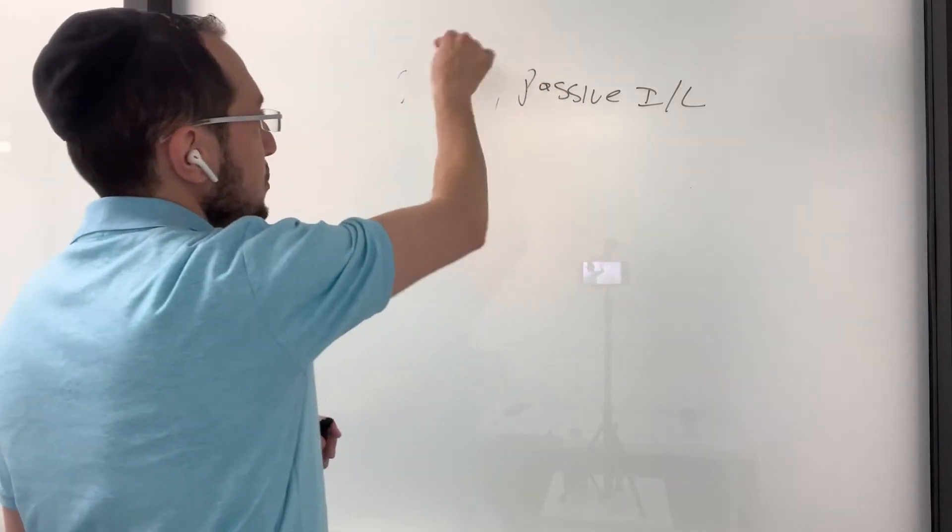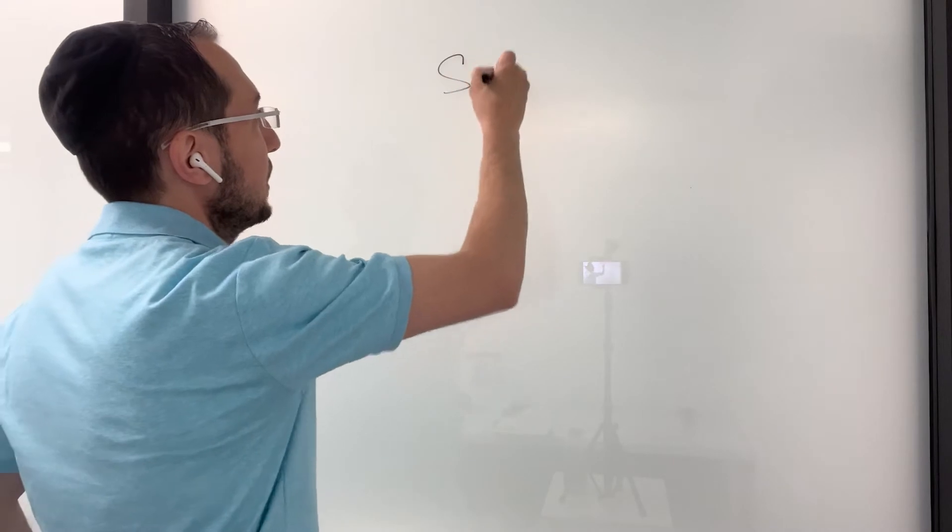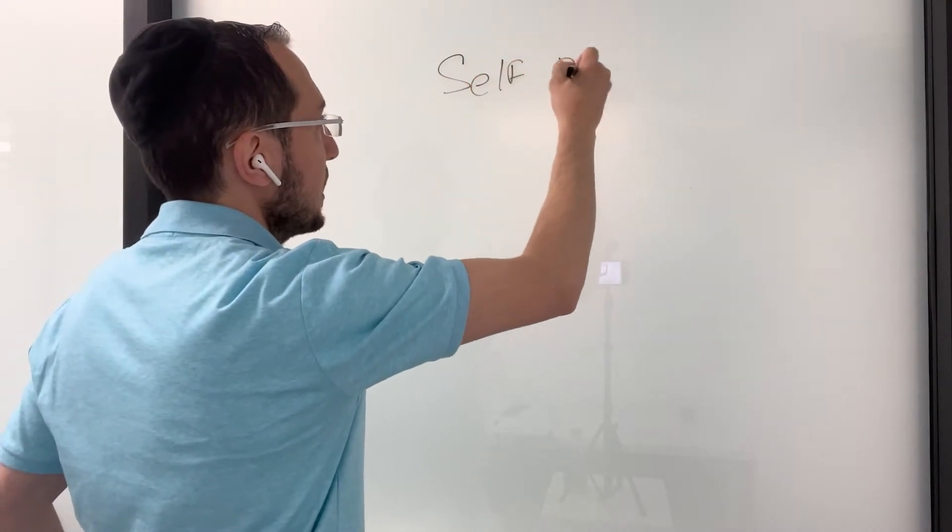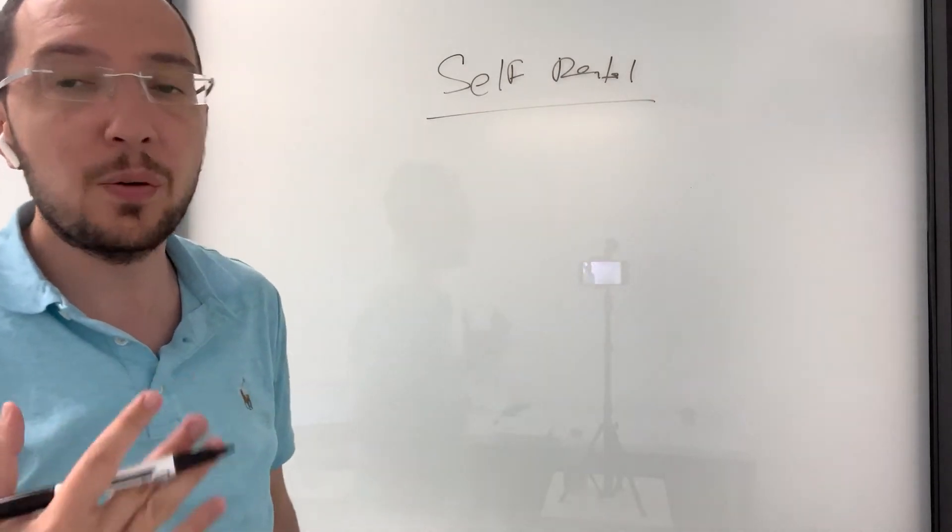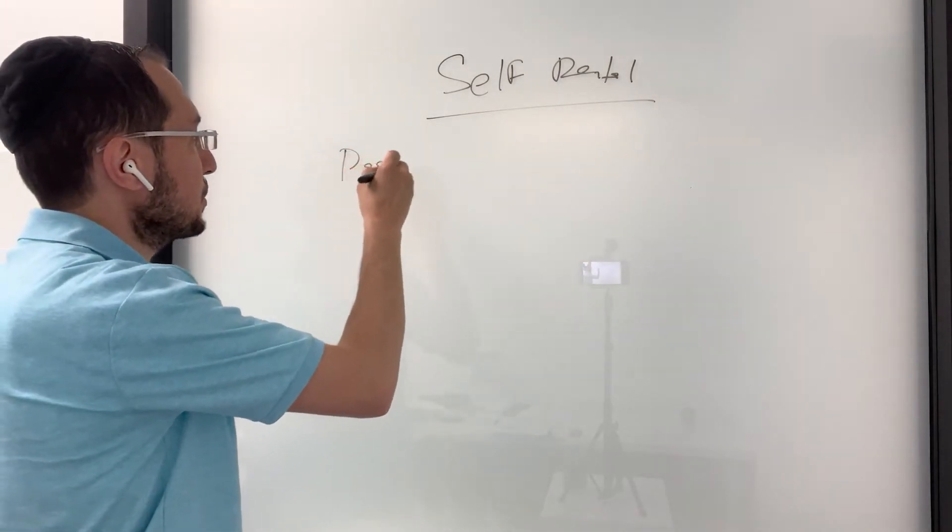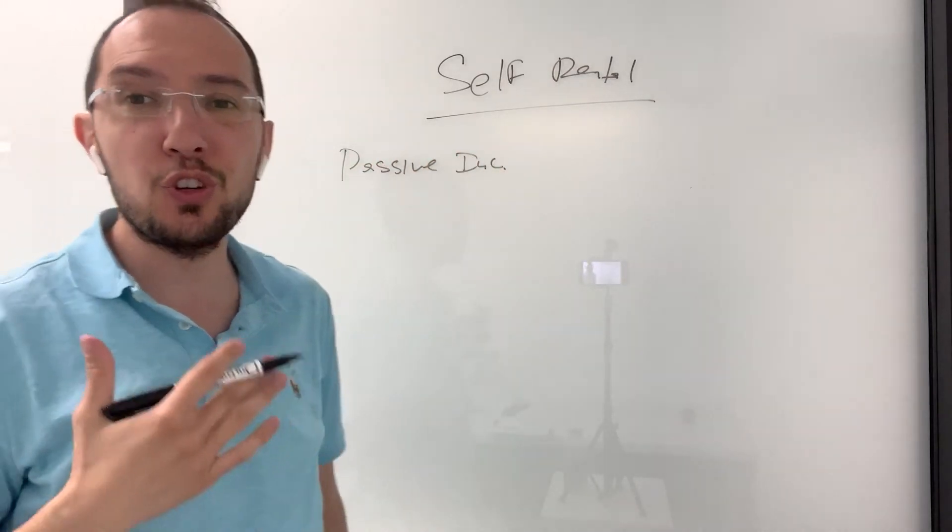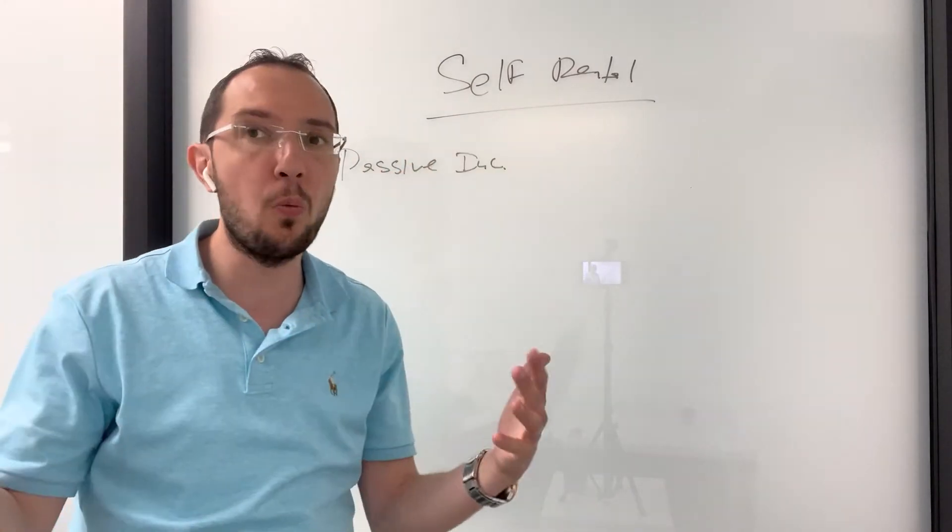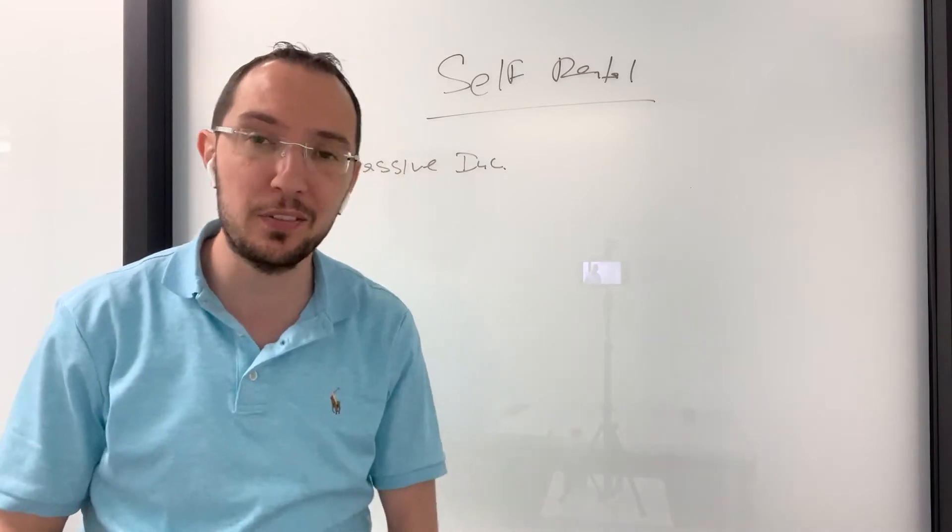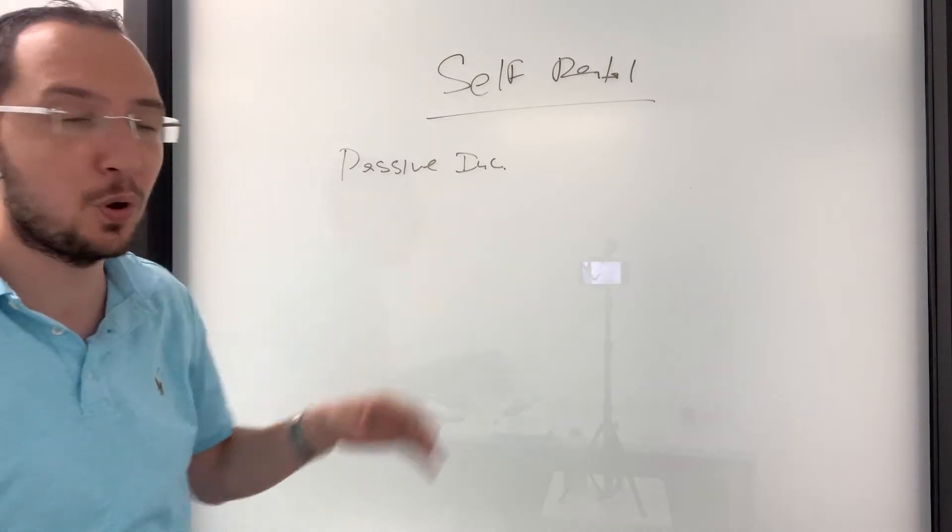So one thing I want to talk to you about is a self-rental strategy, and that's exactly what we're going to talk about today, and stick around because this is really important. Before we get to it, I want to define passive income rules. I want to cover basics, because in order for you to take advantage of the self-rental tax strategy and open up an amazing opportunity of a lot of deductions, you need to understand passive income rules and passive losses.